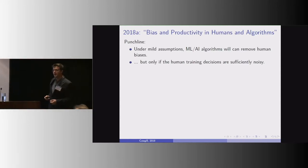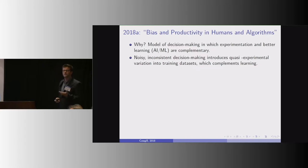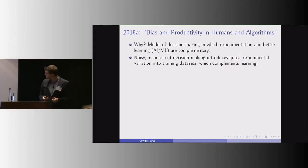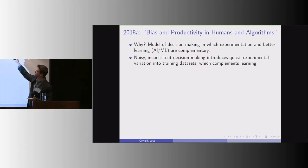So why is that? I create a model of something that I think is probably pretty obvious. Experimentation and better learning in the form of AI are complementary. And then noisy or inconsistent historical decision making introduces basically quasi-experimental training variation into training data sets.